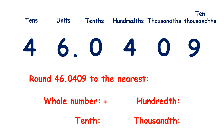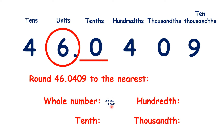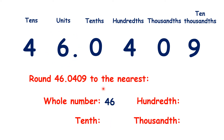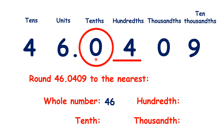For the nearest whole number, we can see that we're rounding down, so we have 46. Now for the nearest tenth, we're rounding down, so the zero in our tenths stays a zero, but rather than writing 46.0, we can write 46, because 46.0 is the same as 46. So rounding to the nearest tenth can give us a whole number as our answer.